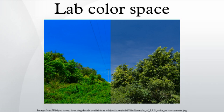A LAB color space is a color opponent space with dimension L for lightness and A and B for the color opponent dimensions, based on non-linearly compressed CIEXYZ color space coordinates. The dimensions of the Hunter 1948 L, A, B color space are L, A, and B.